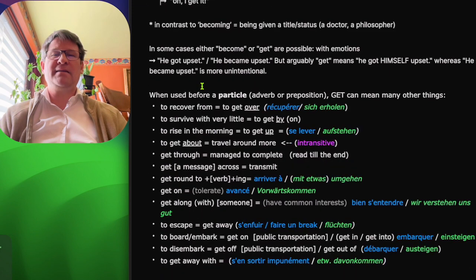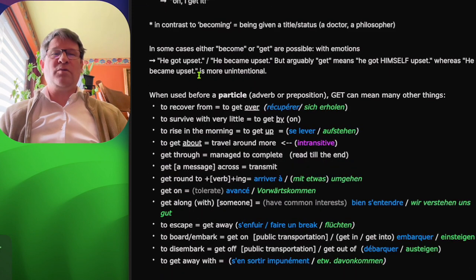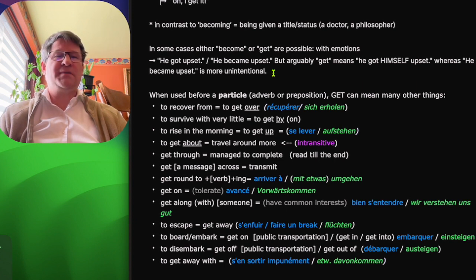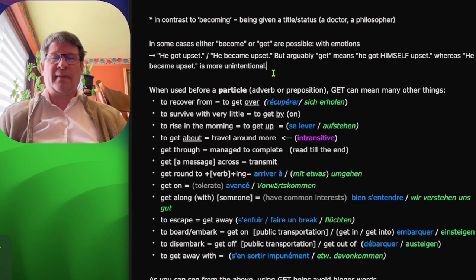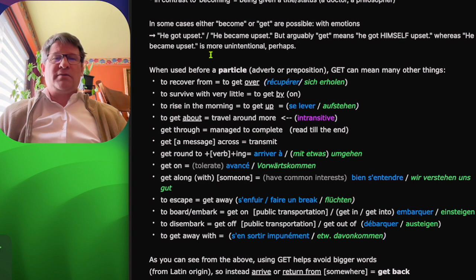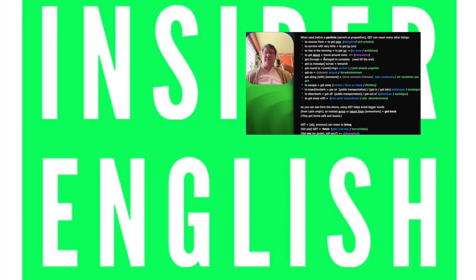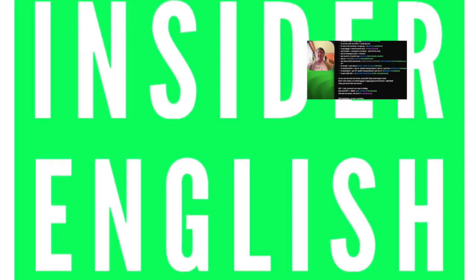In some cases, either become or get are possible with emotions. So he got upset or he became upset. But arguably get means he got himself upset, whereas he became upset is more unintentional. When used before a particle, adverb or preposition, get can mean many other things. So my book describes these in detail.